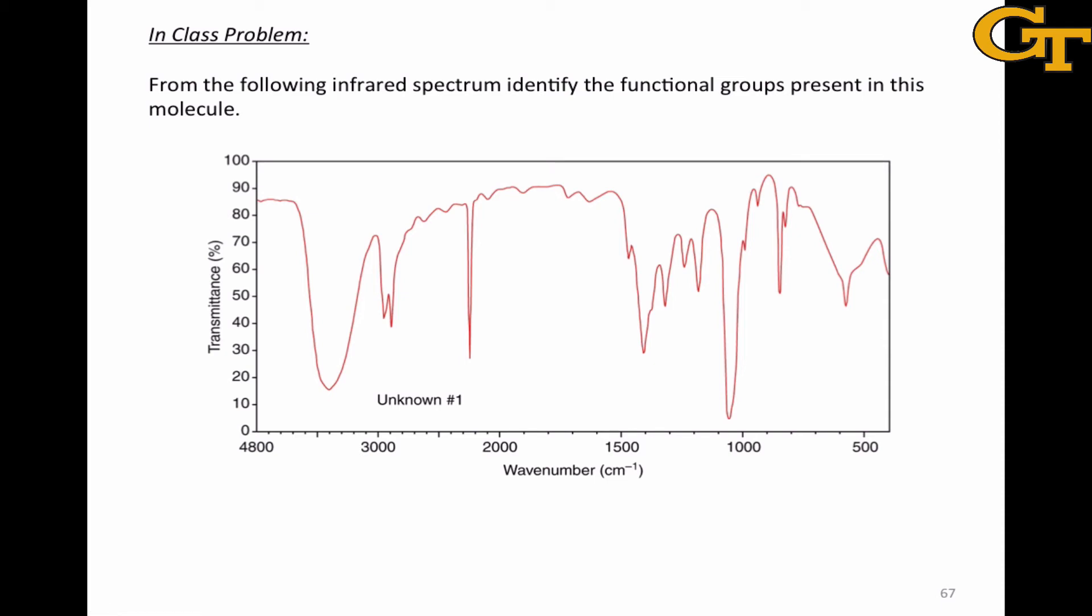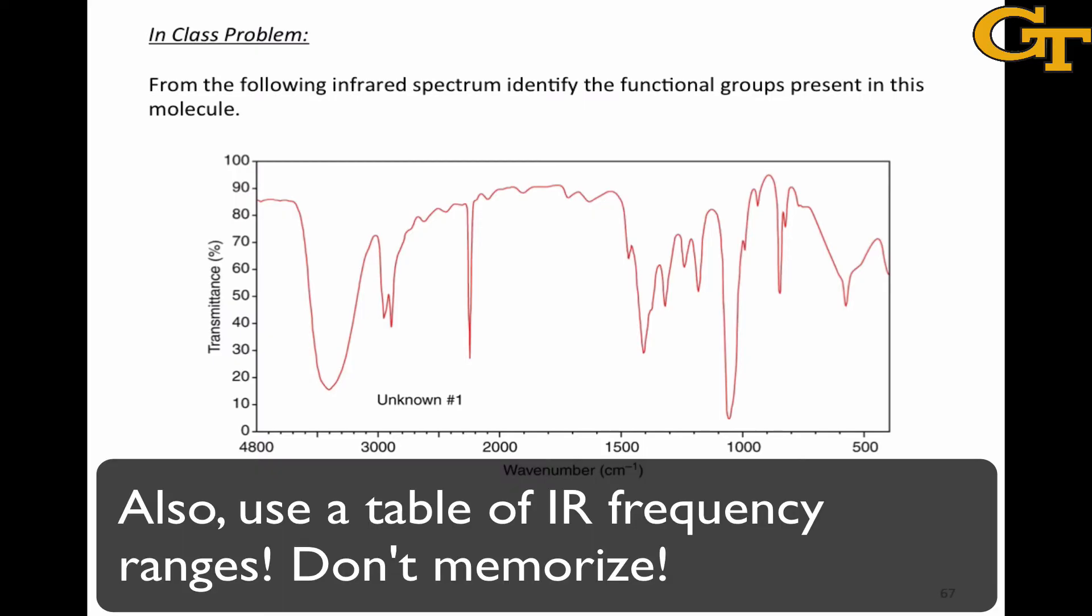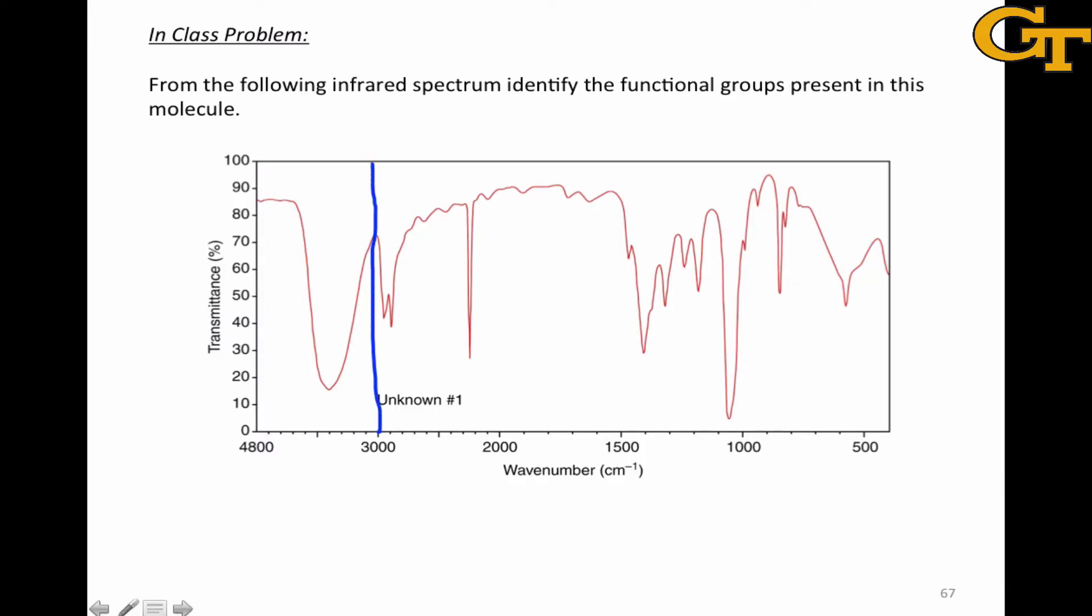Infrared spectroscopy is a tool that allows us to identify the functional groups within a molecule without gaining information about how those functional groups are connected to each other. As you tackle infrared spectroscopy problems, I would encourage you to start with the big picture and then focus on the important elements of a spectrum. That boils down to dividing up the infrared region of the spectrum into very specific regions.